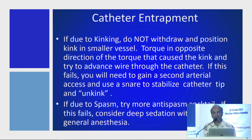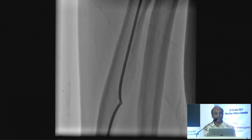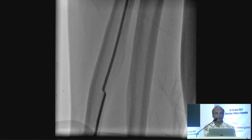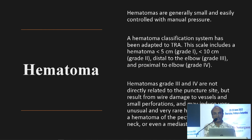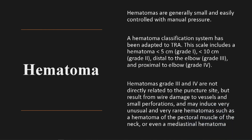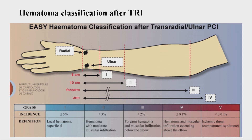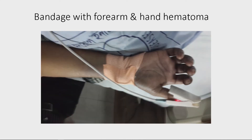Arteriovenous fistula — Professor Nur Alam has already mentioned it very nicely. Denotting is the key, and it should be done very gently. For hematoma: hematomas are graded by a hematoma scale — less than 5 cm is grade one, 10 cm is grade two, below the elbow is grade three, and above the elbow is grade four. This is the hematoma bandage.